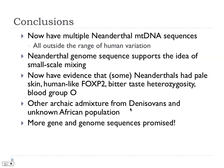Conclusion: We now have multiple Neanderthal mitochondrial DNA sequences, and all of those sequences remain outside the variation of modern humans. The genome sequence suggests we do have small-scale mixing. We have evidence that Neanderthals had pale skin, human-like FOXP2, bitter taste perception, and blood group O. We now also have this other archaic admixture from the Denisovans. We're going to see much more coming — just this morning on Twitter I read that ancient Native American genomes are expected very soon. It's all going to get very exciting.